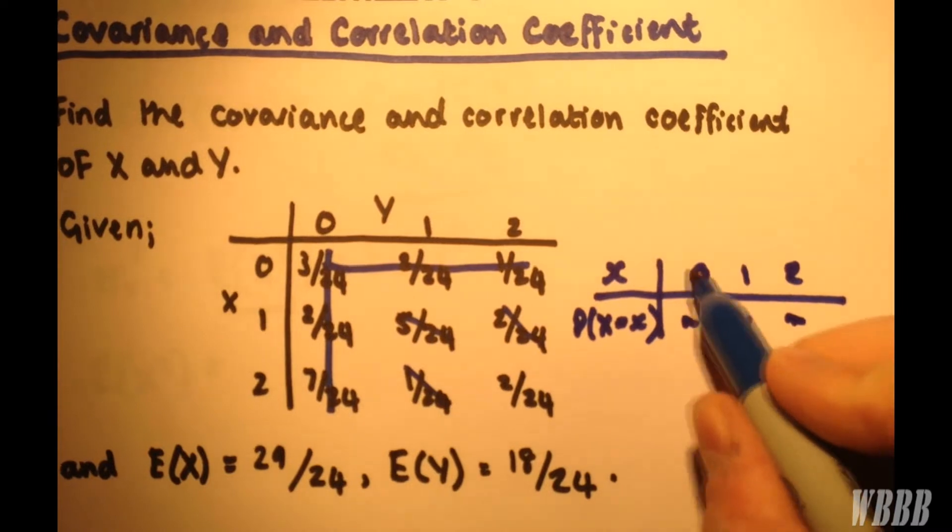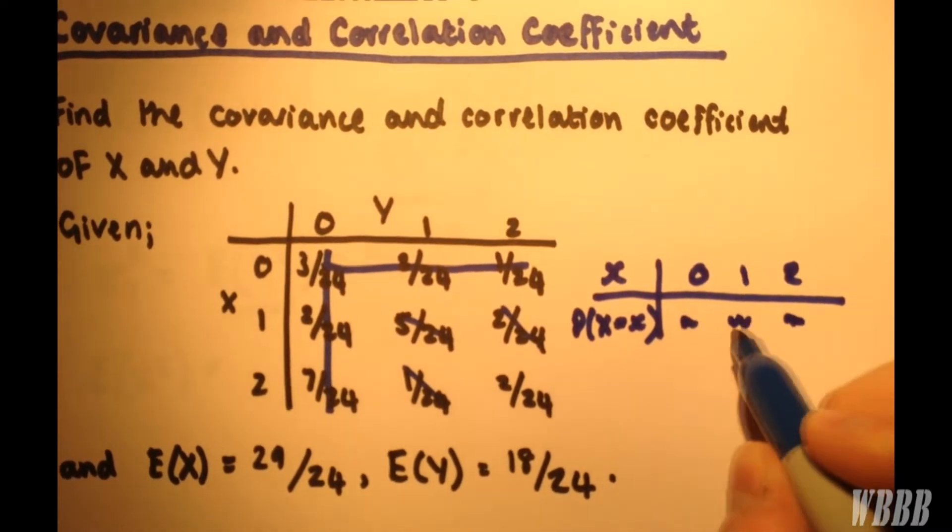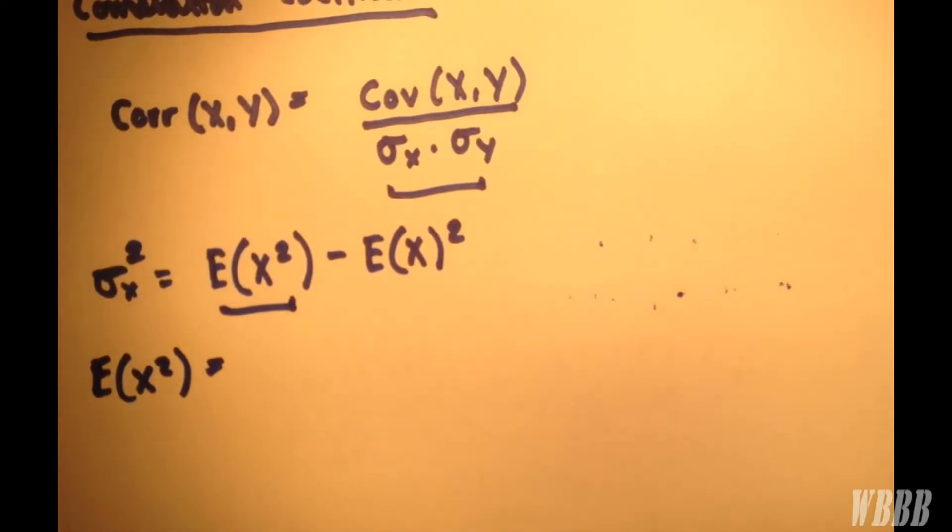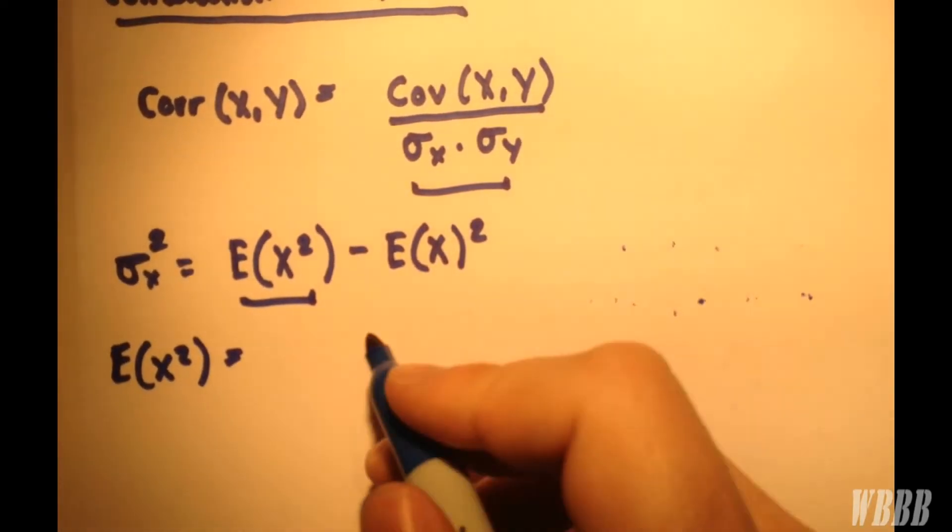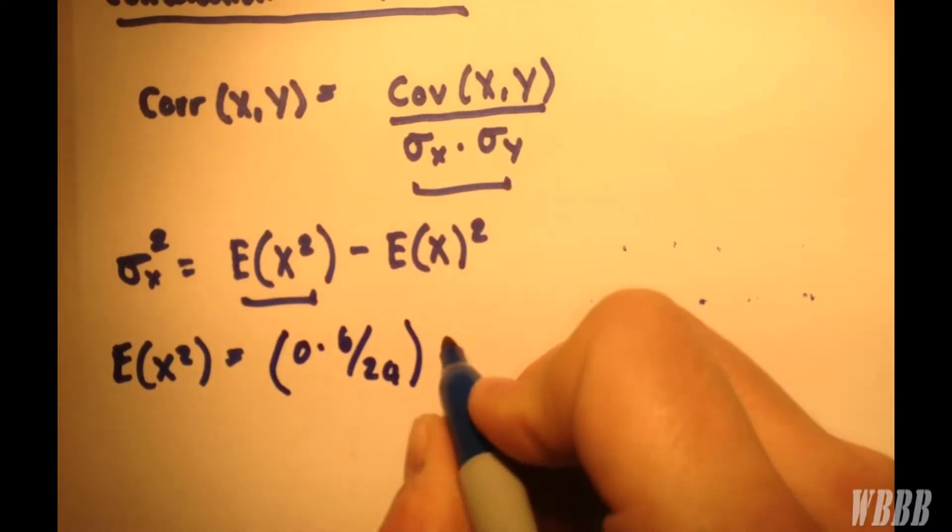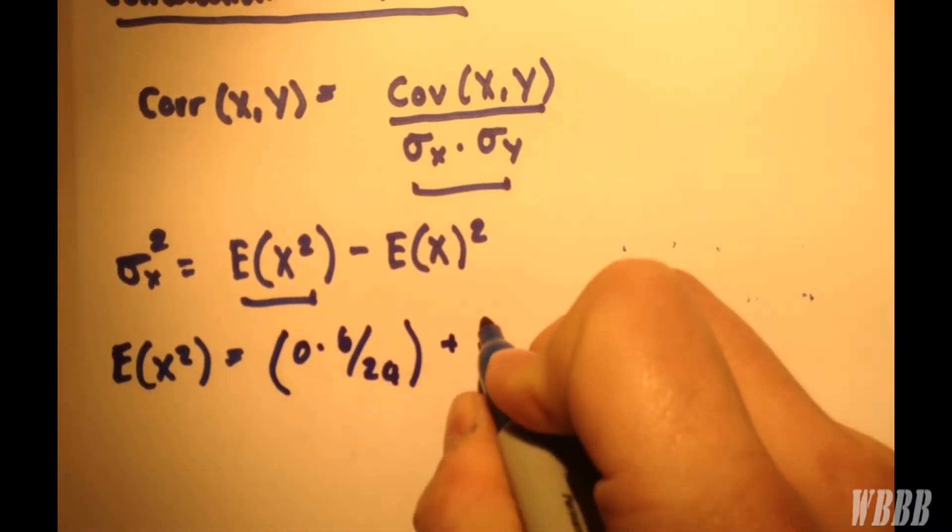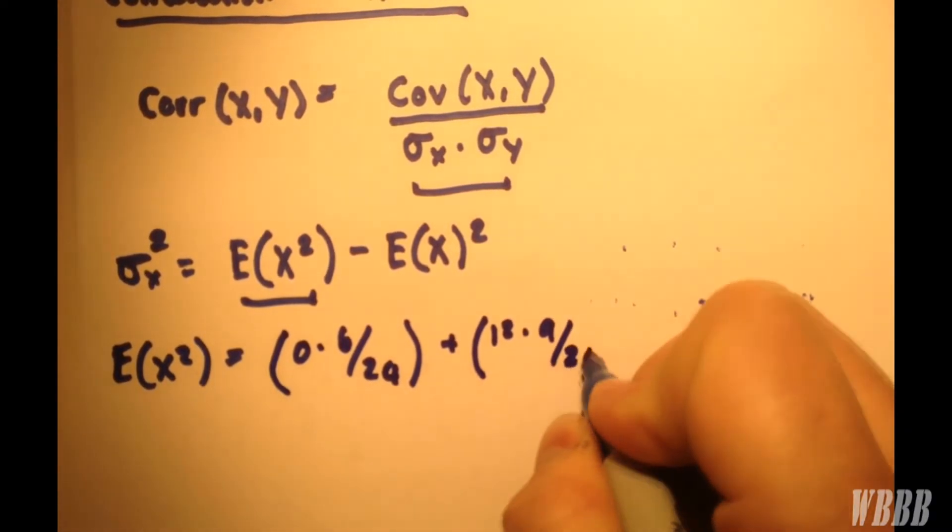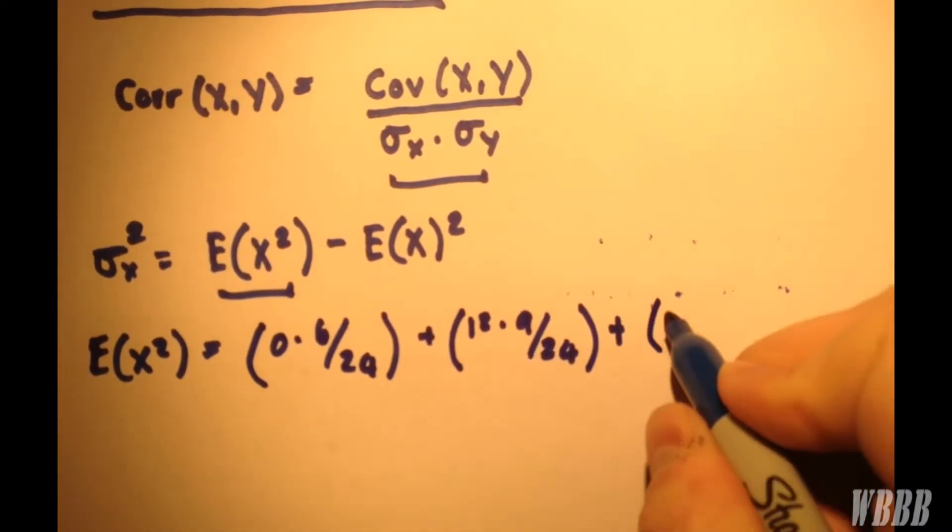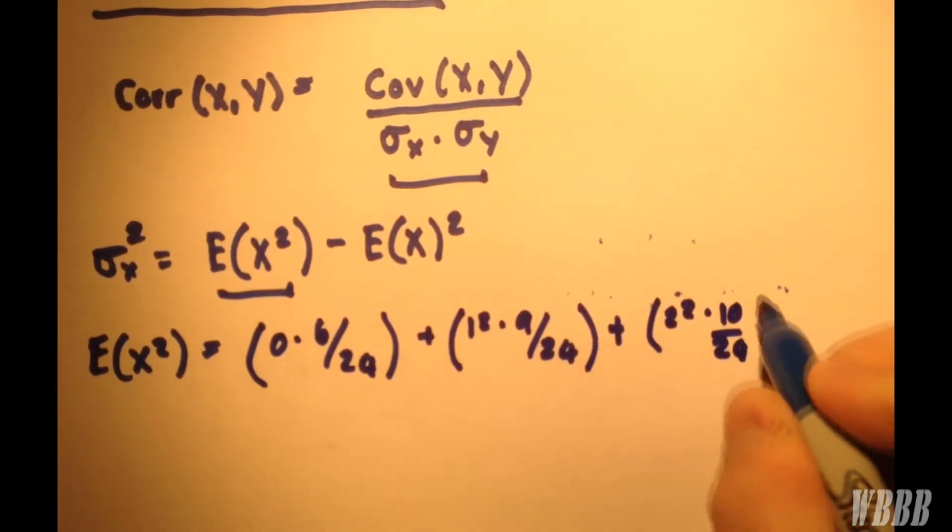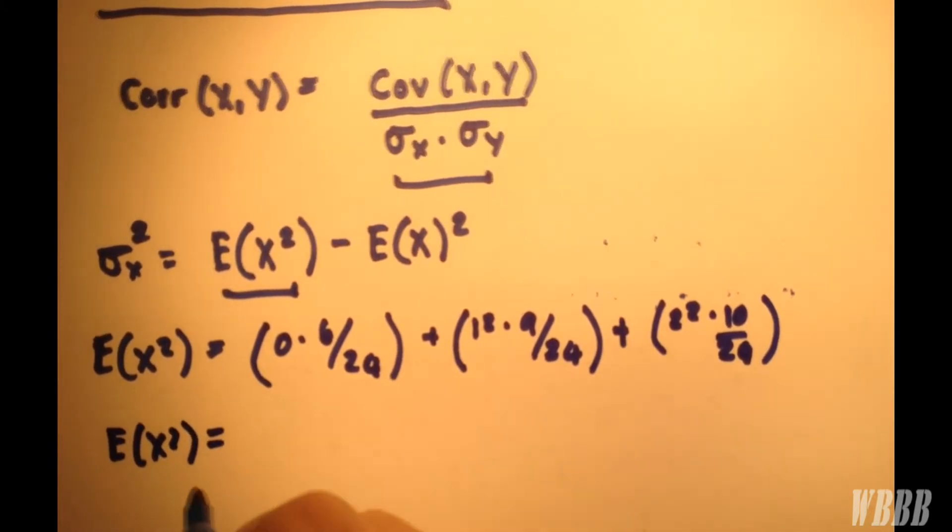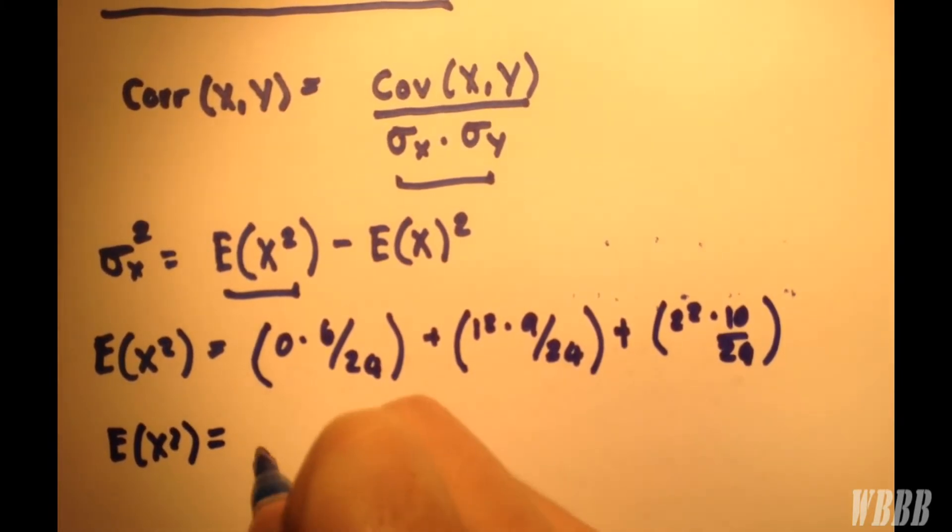All we're doing is having 0 squared multiplied by this, plus 1 squared multiplied by this, plus 2 squared multiplied by this value here. So it follows. We have 0. Obviously squaring it does nothing, so that's 0. So that's 1 squared, 9/24. Plus 2 squared, 10/24. And that gives us a value of E(X²) equal to 49/24.